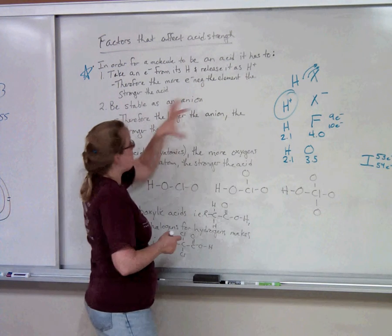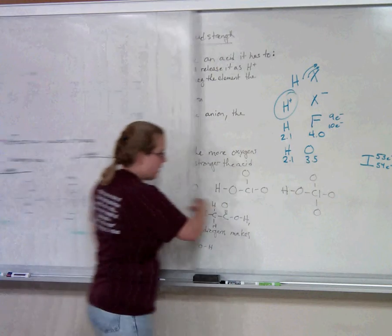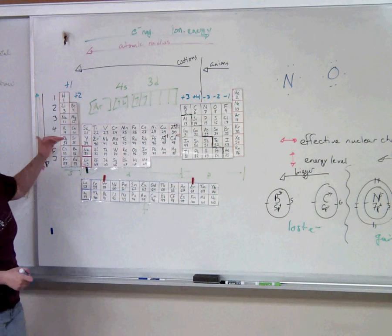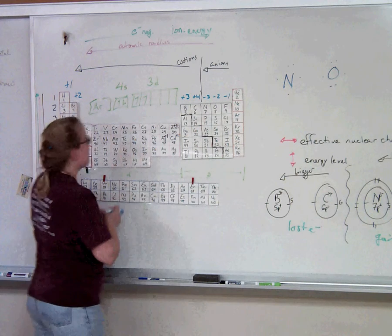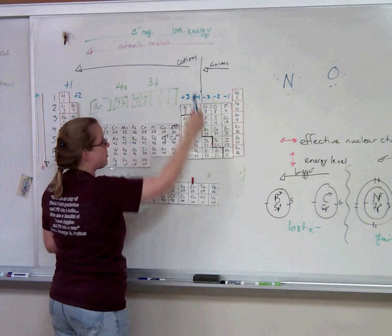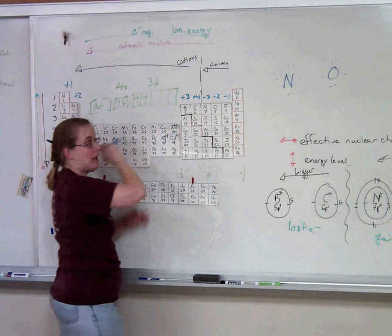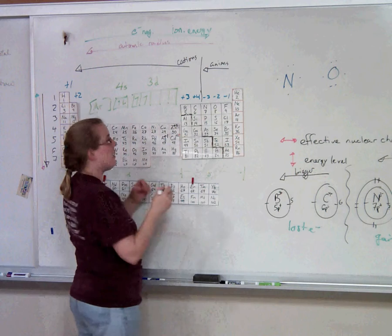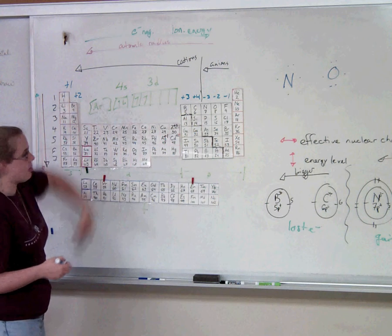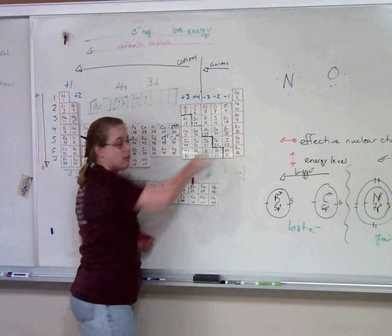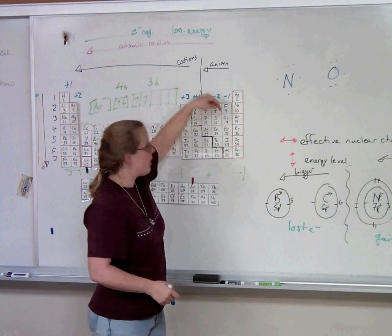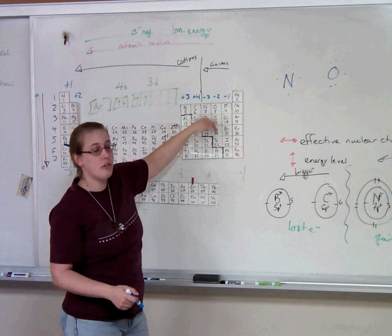Let's talk about periodic table trends. The more electronegative the element, the more likely it is to pull hydrogen's electron away. Electronegativity increases as you go left to right on the periodic table — so fluorine is more electronegative than oxygen, nitrogen, and so on. That rule applies only within a row. As you go down a column, electronegativity decreases but size increases a lot, and the size effect dominates, so going down a column actually increases the acidity.